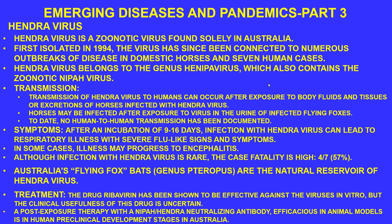Hendra virus belongs to the genus Henipavirus, which also includes the Nipah virus. Transmission to humans usually occurs after exposure to body fluids, tissues, or excretions of horses infected with Hendra virus. Horses may be infected after exposure to the virus in the urine of infected flying foxes — a type of bat called Pteropus, unique to Australia — which are the natural reservoir of the Hendra virus.